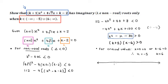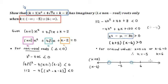On the number line, we put minus 5 and then the other critical value at 6. We need to evaluate both brackets — K plus 5 and K minus 6 — and evaluate the signs in each of the three regions: region 1, region 2, region 3.